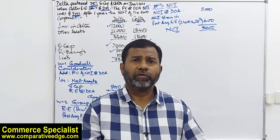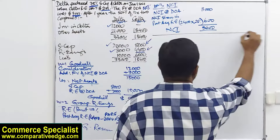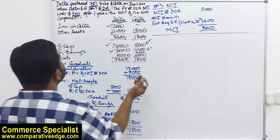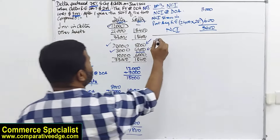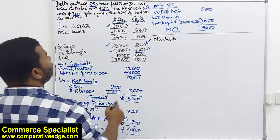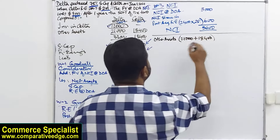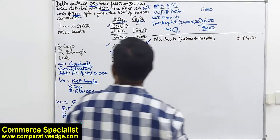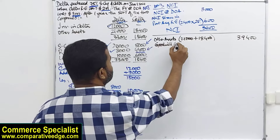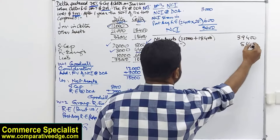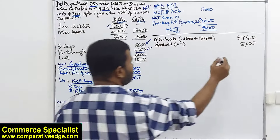After doing all these calculations we are ready to prepare the consolidated statement of financial position. Starting with assets: investment never comes in — it is cancelled out. Other assets: 21,000 plus 18,400 gives 39,400. We also have goodwill as per working one — which is 5,000 — so total assets are 44,400.